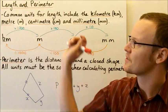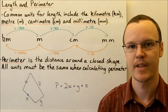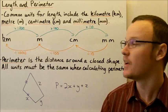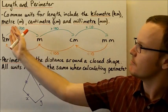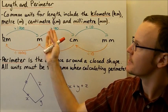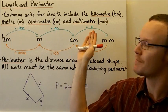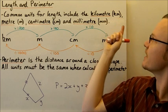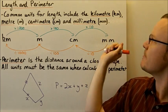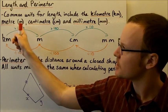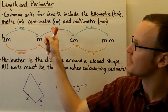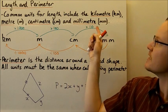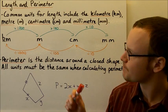Today we're going to look at length and perimeter. The common units for length include the kilometre, metre, centimetre, and millimetre. They're given these abbreviations: km for kilometre, m for metre, cm for centimetre, and mm for millimetre.